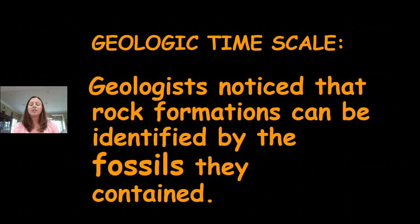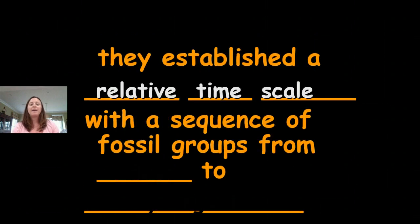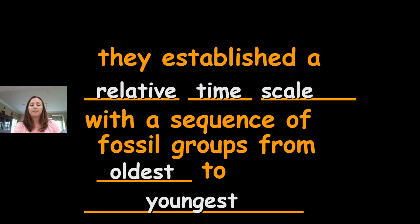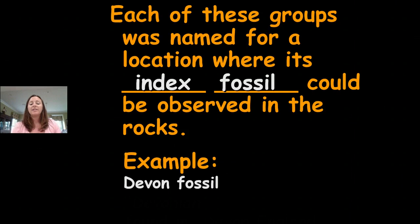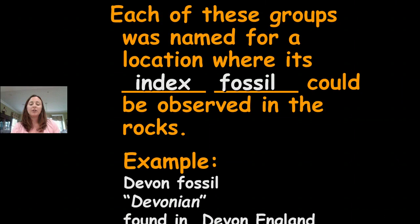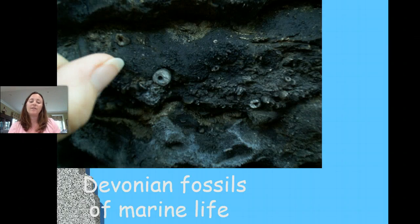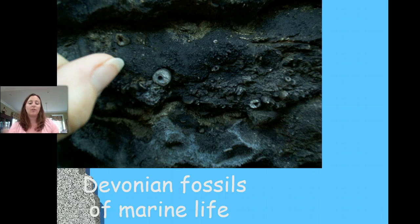We have a geological timescale. Geologists noticed that rock formations can be identified by the fossils they contain. They established a relative timescale with a sequence of fossil groups from oldest to youngest, and each group was named for a location where its index fossil could be observed. For example, the Devon fossil was given the time period name 'Devonian' — it was found in Devon, England. Because this fossil was so prevalent within the same rock strata, geologists named this period the Devonian period.